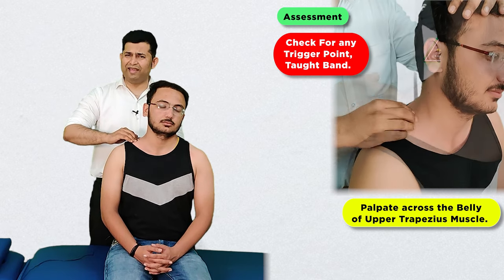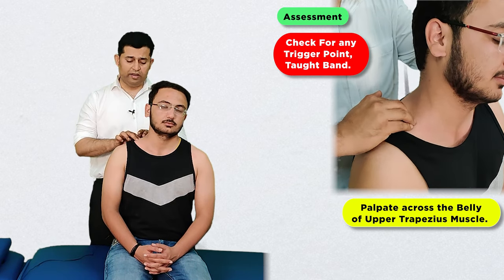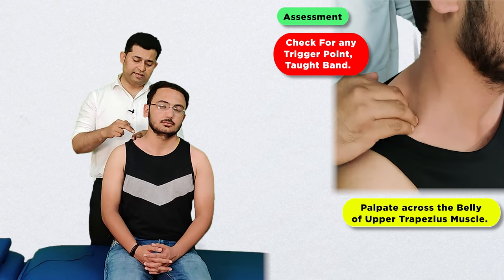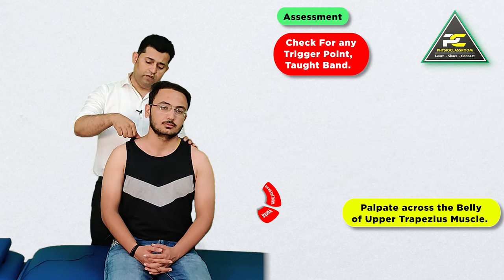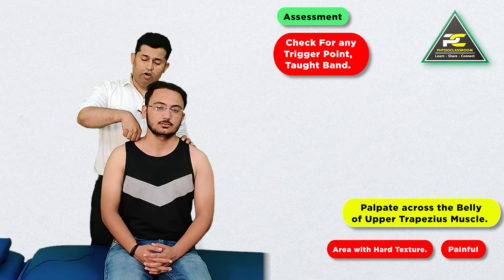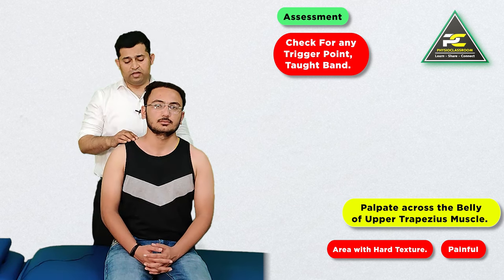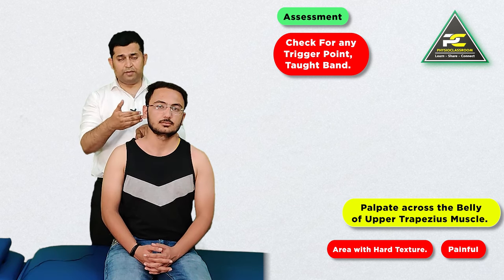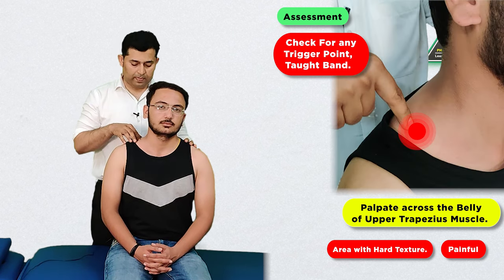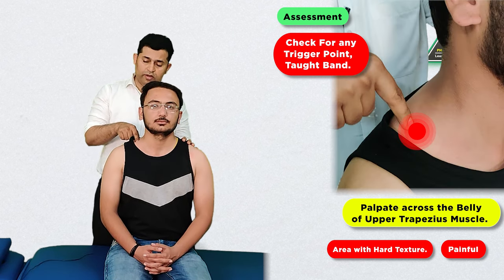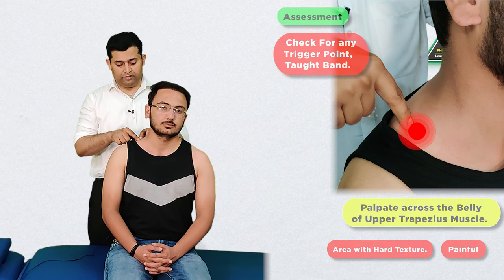Taut bands are areas which feel hard in texture compared to surrounding areas, and when the therapist presses those regions they often harbor trigger points which make the patient jump or grimace with pain. These are the areas we are looking to treat using the functional release method.